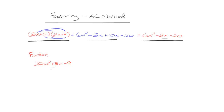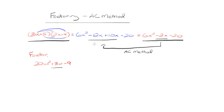We're going to take this 3w and rewrite it as two different terms that add to 3w. There's a very specific way we need to split that up. This is what we're going to use the AC method for — it helps us find the exact two terms that existed before simplification. After that, we take this four-term expression and simply factor by grouping.